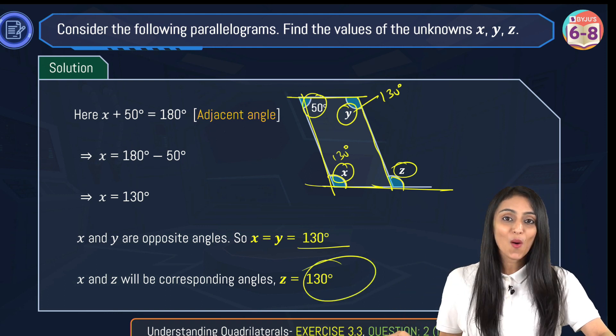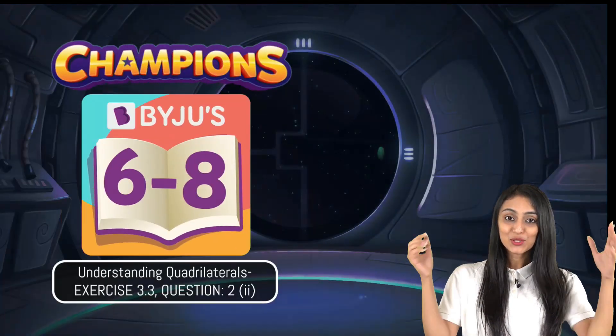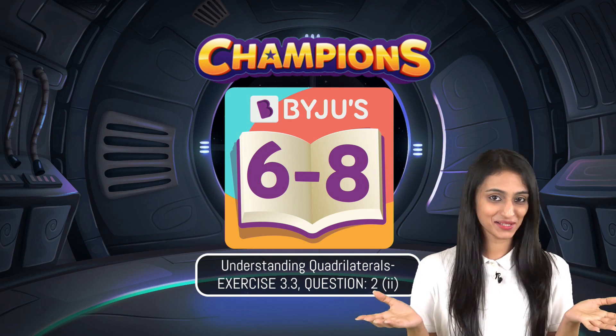So now we have the values of all the three unknown variables x, y and z. Now do leave a comment for me in the comment section, how you like this video.